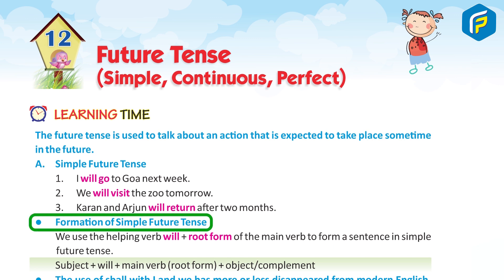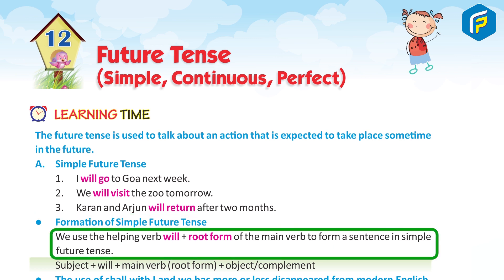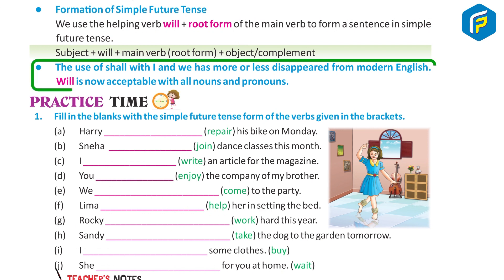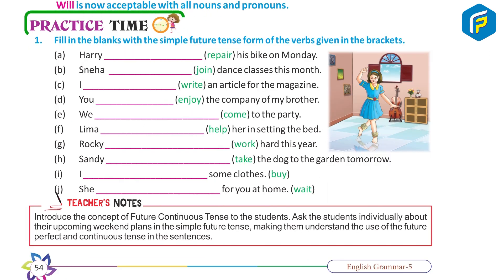Formation of Simple Future Tense: We use the helping verb 'will' to form a sentence. Structure: Subject + will + main verb (root form) + object/complement. The use of 'shall' with I and we has more or less disappeared from modern English. 'Will' is now acceptable with all nouns and pronouns.